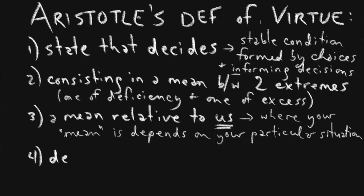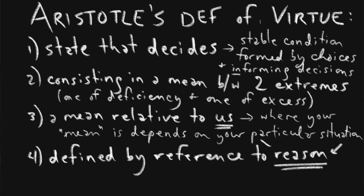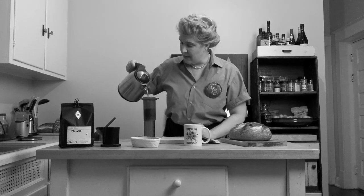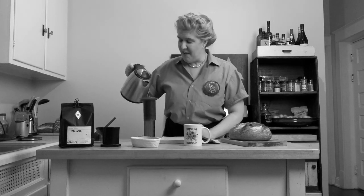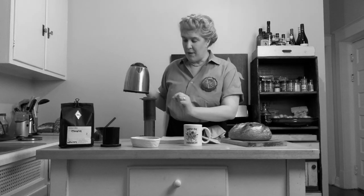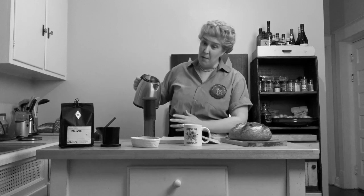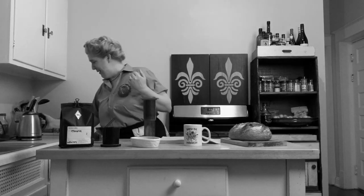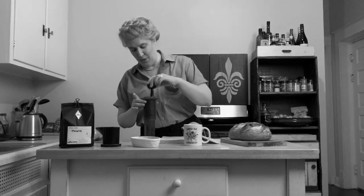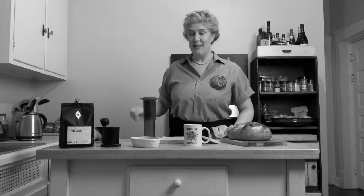The fourth part of Aristotle's definition says that virtue is defined by reference to reason. When I decide how much water I'm going to pour in, I have to think carefully about just how much coffee I want — I can't simply pour blindly. We've all done things like that, but it doesn't work well. I must choose how much coffee and how much water by using reason. Practical reasoning plays an important part in our developing virtue.